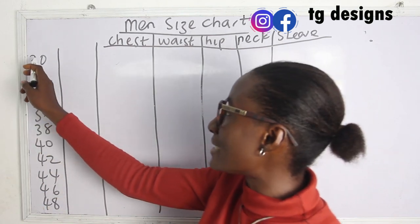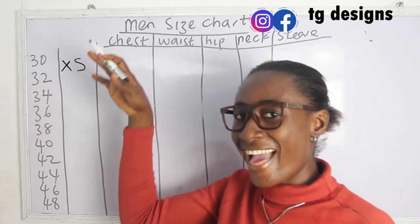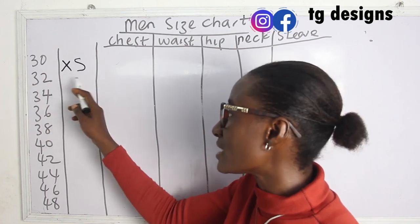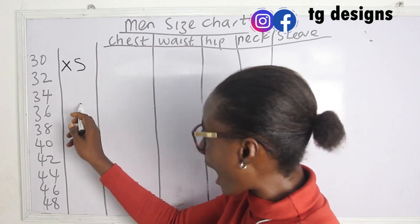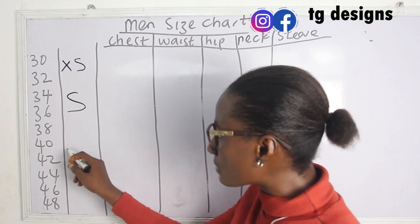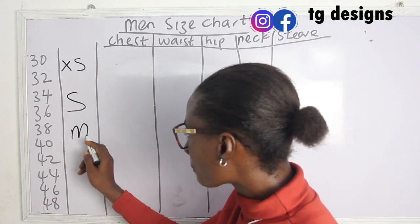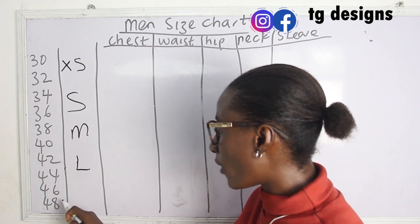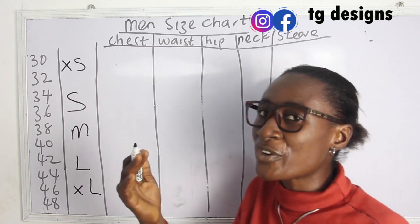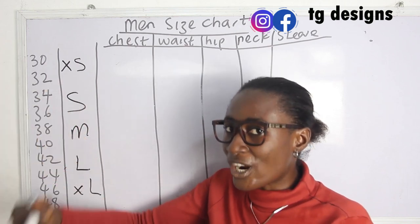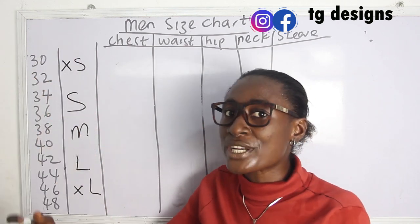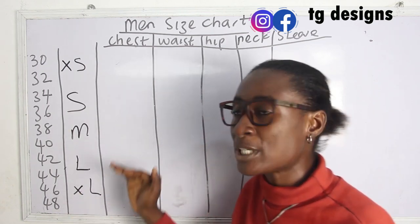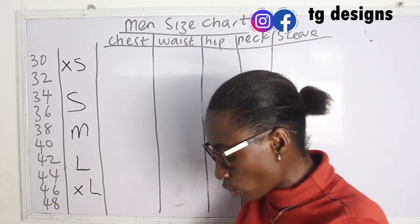So size 30 to 32 is XS (extra small). From 34 to 36 we have small. From 38 to 40 we have medium. From 42 to 44 we have large. From 46 to 48 we have extra large. If you want to increase to 50 to 52, that would be extra extra large. Once you know the formula it's easy to extend it further.